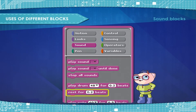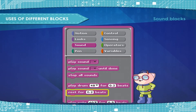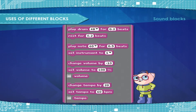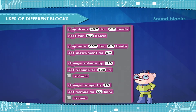Rest for beats — pauses the script for the amount of time. Play note for beats — plays the note for the amount of beats. Set instrument to — sets the instrument to the specified one.